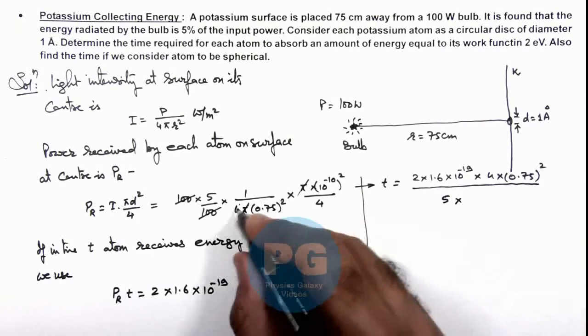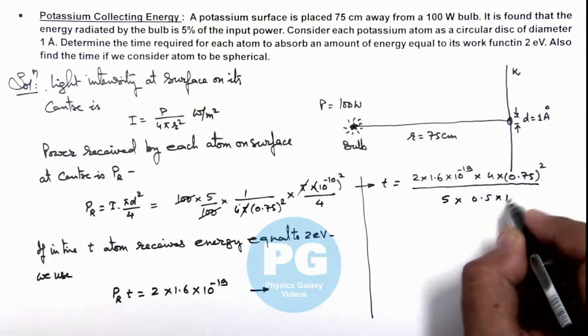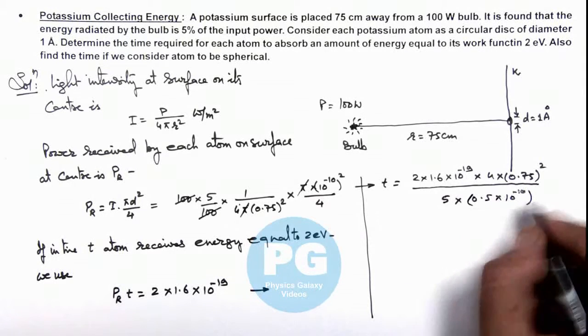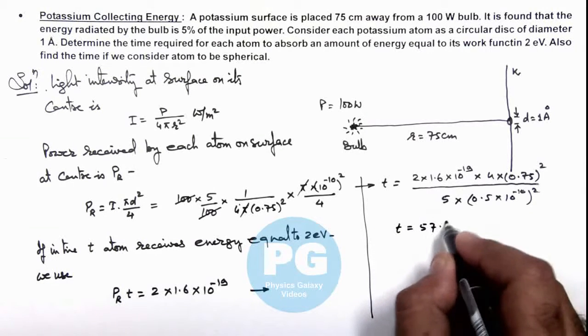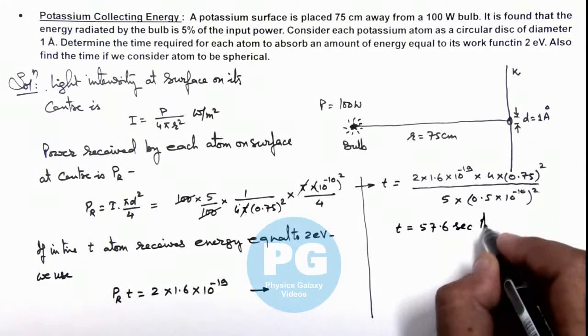5 multiplied by (10⁻¹⁰)² (where 4 can be taken as 0.5 × 10⁻¹⁰ whole squared). On simplifying, we get t = 57.6 seconds. That is the result of this problem.